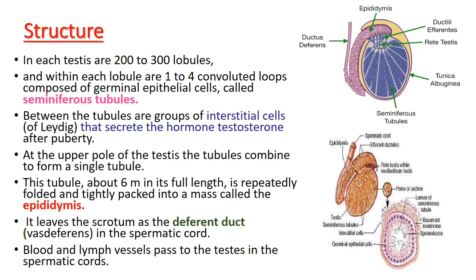Each testis contains 200 to 300 lobules, and within each lobule there are one to four convoluted seminiferous tubules composed of germinal epithelial cells. Between these tubules are groups of interstitial cells that secrete the hormone testosterone after puberty.